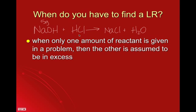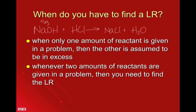You have to find the limiting reactant if you're given two amounts. So, if I said not only do you have five grams of sodium hydroxide, but you also have five grams of hydrochloric acid — and you wouldn't usually measure hydrochloric acid in mass, you'd measure it in molarity, but just for argument's sake — then you've got to figure out which one of these two is going to limit how much salt you can make.